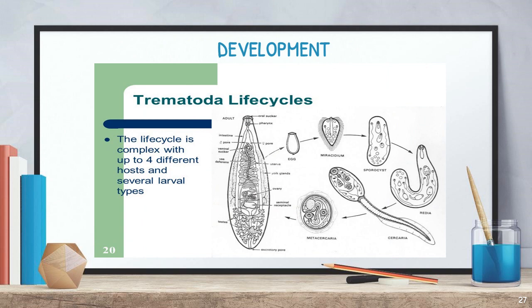Development in Platyhelminthes is indirect, passing through complex larval stages. For example, liver fluke passes through: egg → miracidium → sporocyst → redia → cercaria → metacercaria → adult. This developmental process is complex with many larval stages.